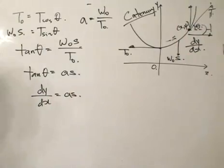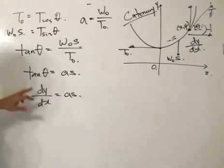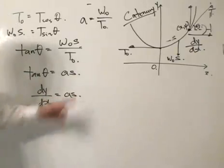S is the arc length from 0 to this point. Tangent θ is the gradient at this point, which is also given by dy/dx. So now we write dy/dx equals AS.